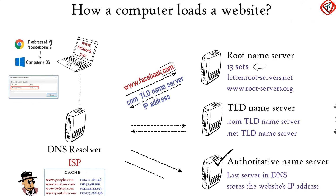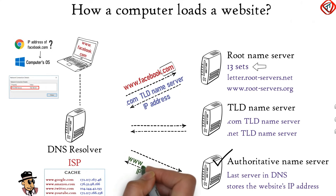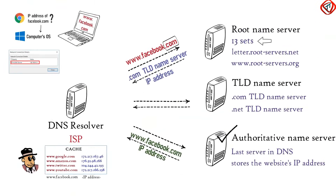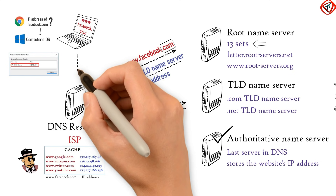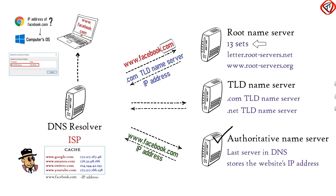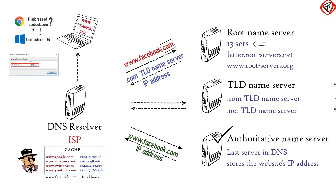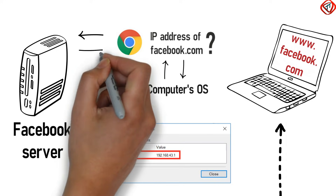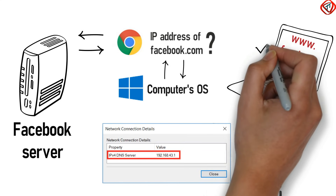Finally, the authoritative name server provides the exact IP address of facebook.com to the DNS resolver. DNS resolver stores this information in its cache for future use and provides the IP address to the computer's operating system. The operating system then forwards it to the web browser, which contacts the Facebook server and loads the requested website, facebook.com.